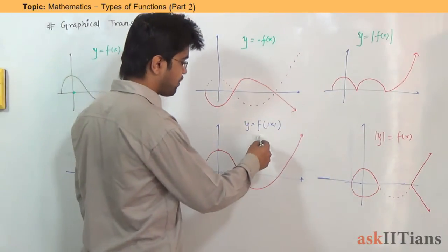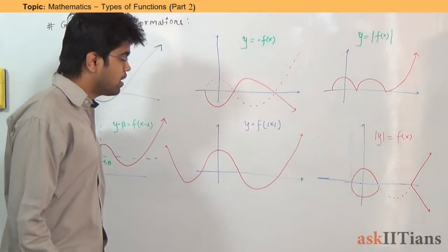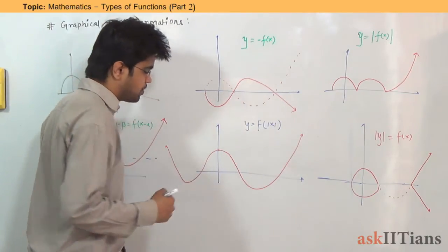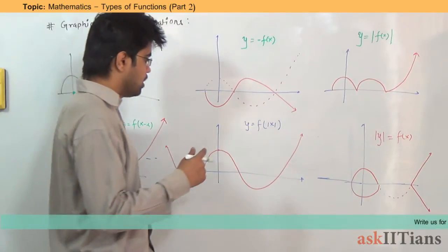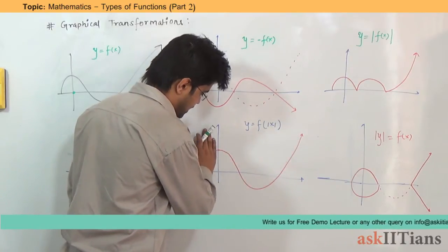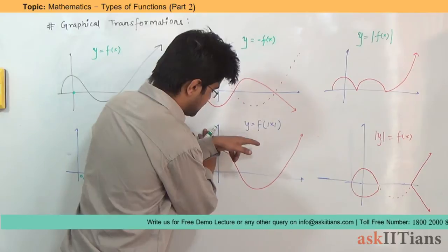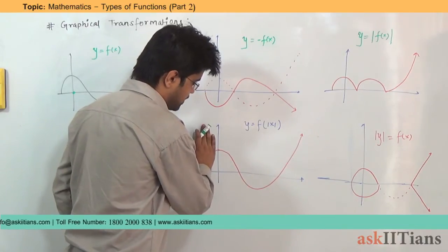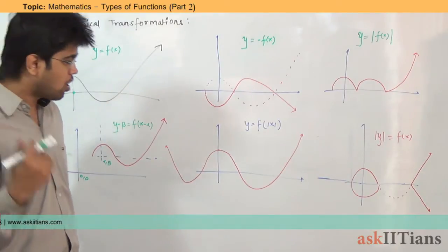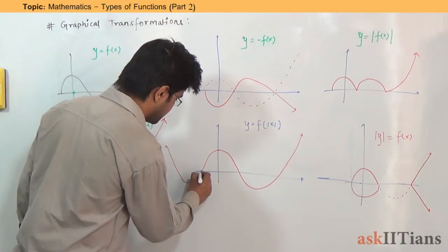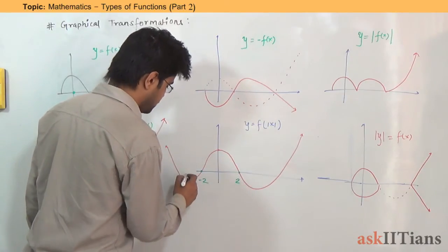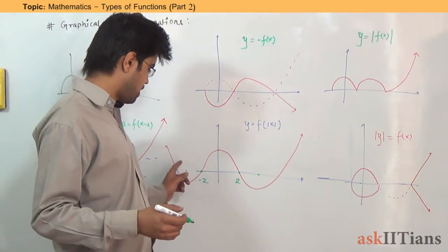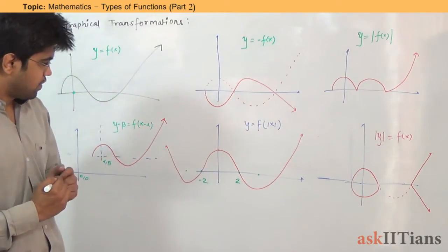For y = f(|x|), modulus is applied on x, meaning the values of x are always treated as positive — even on the negative side. So take the graph on the positive x-axis side and take its image reflected in the y-axis. For example, x = −2 and x = 2 will give the same value; x = −3 and x = 3 will give the same value. That is why we take the mirror image in the y-axis.